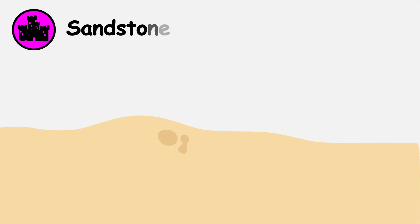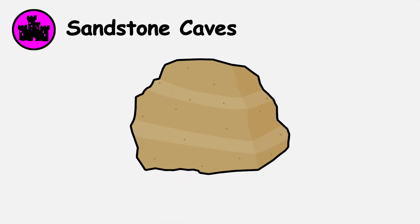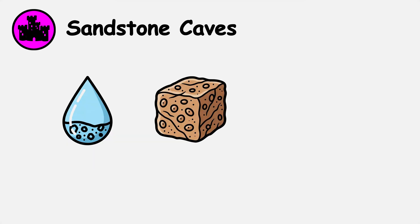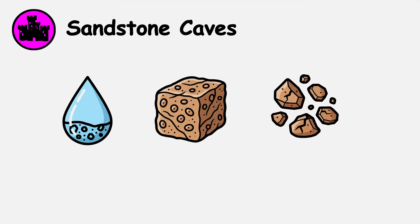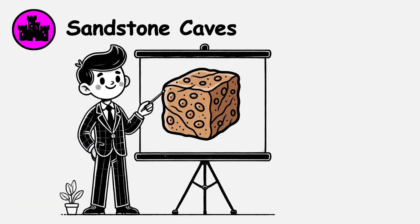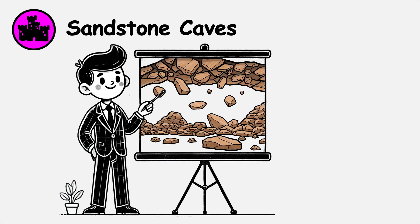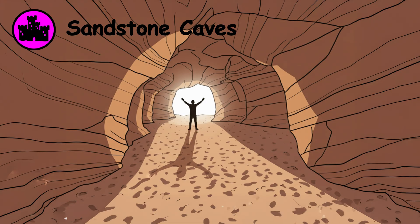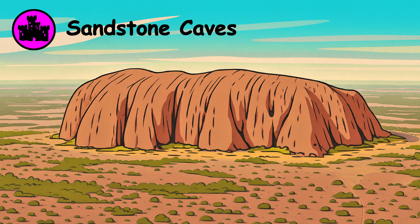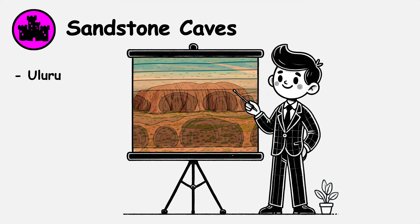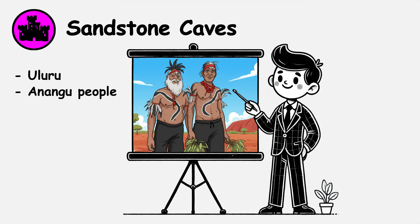Sandstone Caves. Though sand might seem too soft, cemented sandstone can support extensive cave systems. Groundwater dissolves the mineral cement binding sand grains, causing the rock to disintegrate in a process called piping or suffosion. Unlike the smooth walls of limestone caves, sandstone caves feature rough, granular surfaces and frequent collapses as ceiling support diminishes. Wind erosion also creates sandstone caves, especially in deserts where sand-laden winds wear down softer rock. Australia's Uluru contains numerous sandstone caves along its base, many holding sacred significance to indigenous Anangu people.